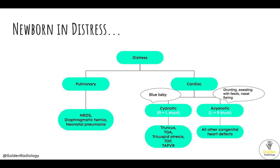If they're hinting at a cardiac etiology, they'll usually give you a classic heart sound or a congenital syndrome. In the cardiac column, you have both cyanotic heart disease and acyanotic heart disease. The cyanotic ones are your blue babies — they have a right-to-left shunt, meaning deoxygenated blood from the right side of the heart will bypass the pulmonary circulation and be pumped out to the rest of the body.